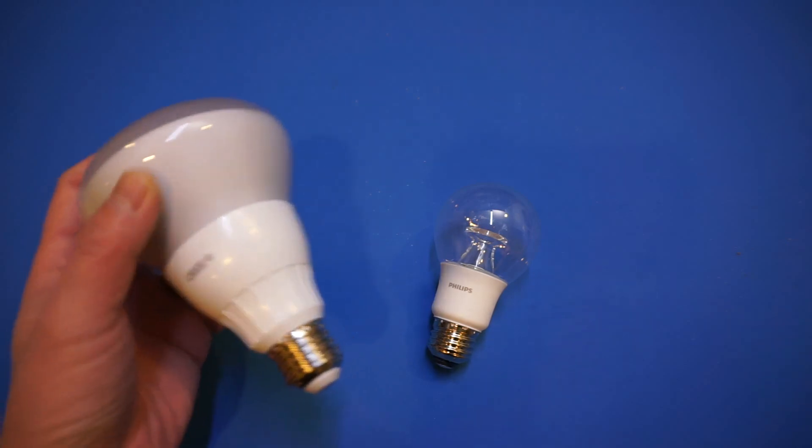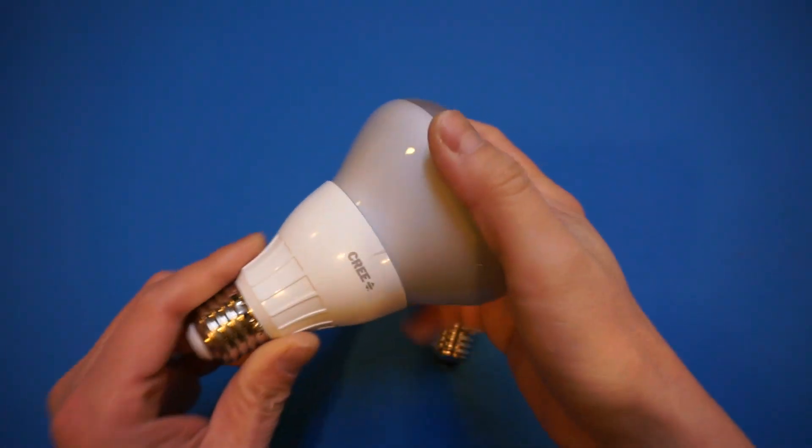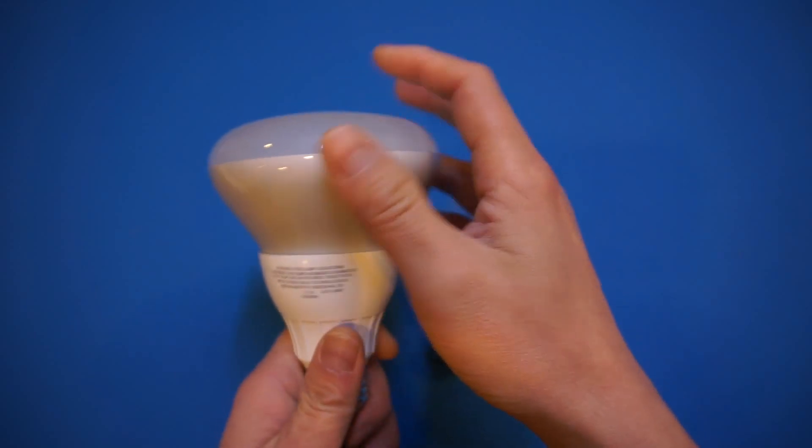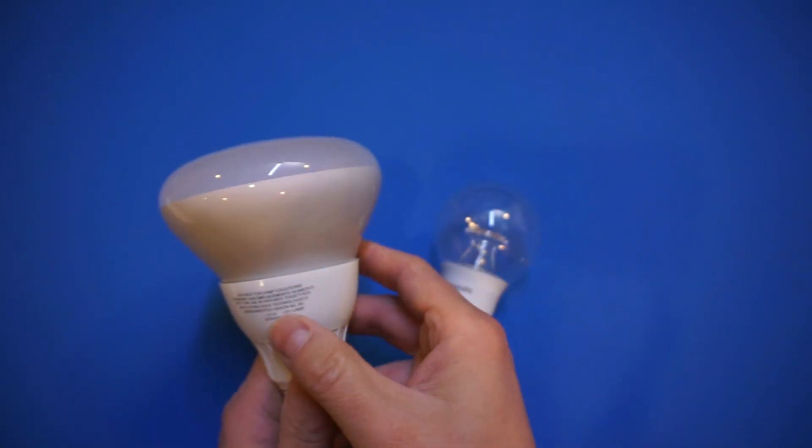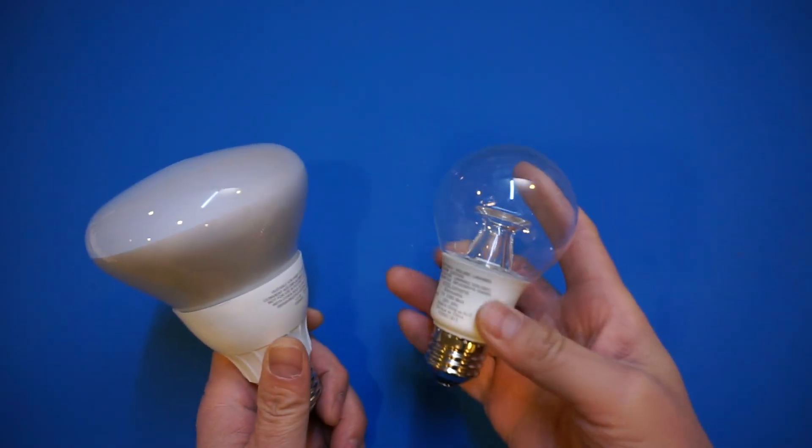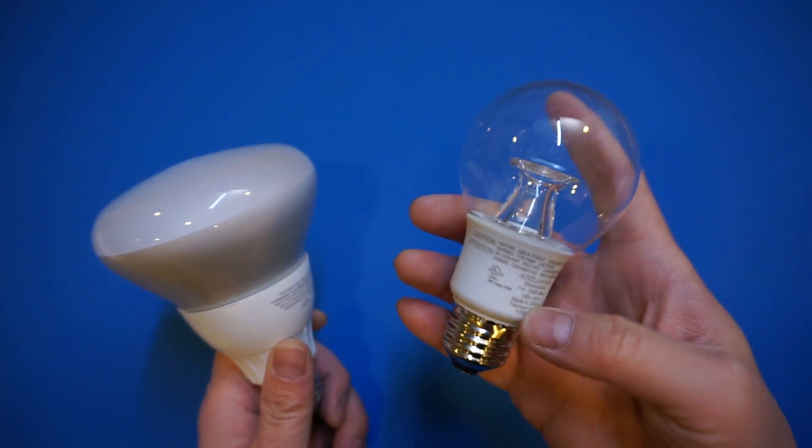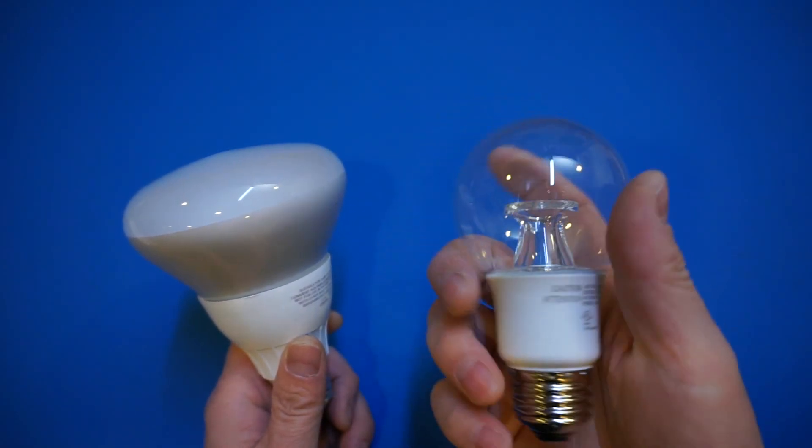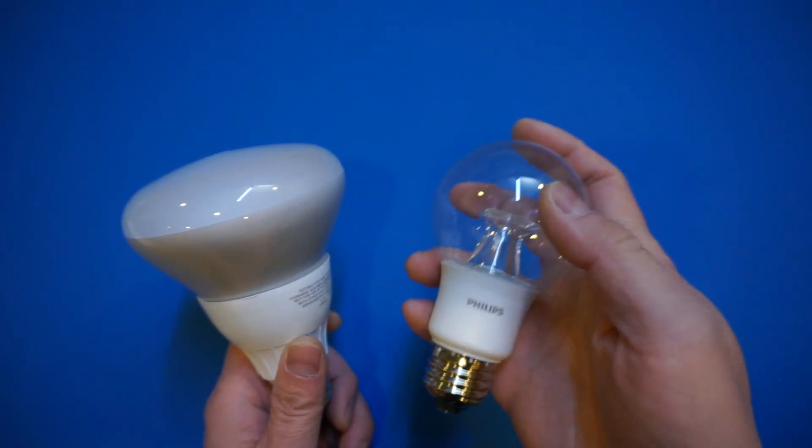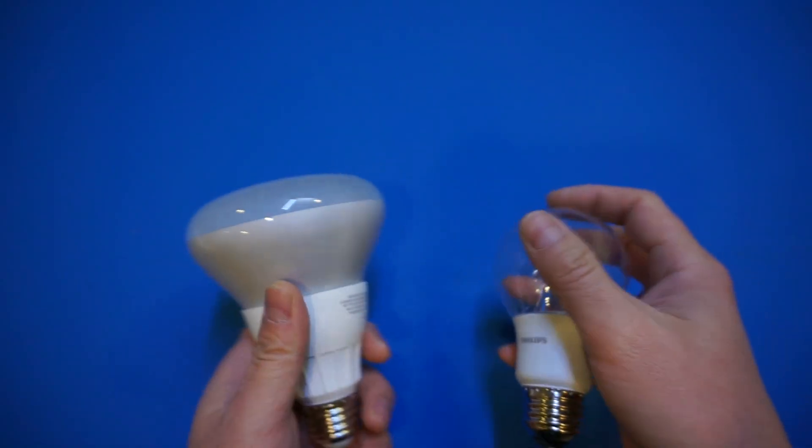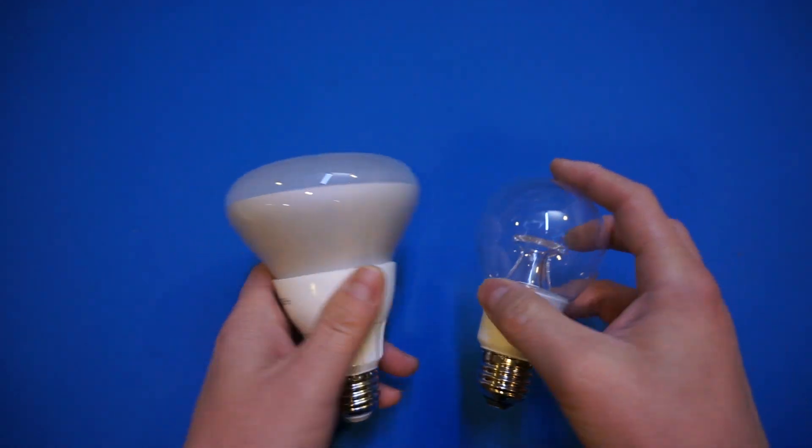So let's open up one of these Cree LED light bulbs and see what's inside. By the way, this is rated for 65 watts at power dissipation of 9 watts, whereas this is 60 watts at power dissipation of 7 watts. So it appears that the Philips ones are slightly, ever so slightly, more efficient than the Cree ones. But nevertheless, they're quite comparable.